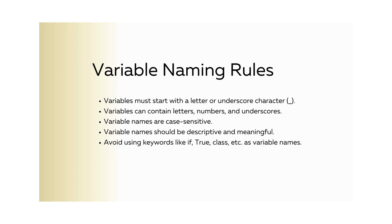There are certain rules we have to follow when naming variables. Variables must start with a letter or underscore character. Variable names can contain letters, numbers, and underscores. Variable names are case sensitive. Variable names should be descriptive and meaningful. Avoid using keywords like if, true, class, etc. as variable names.